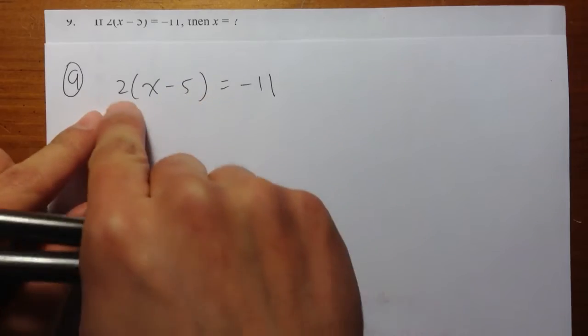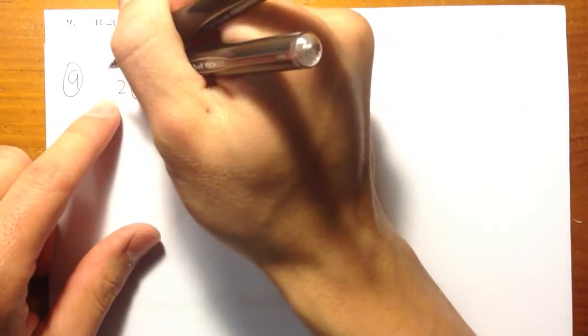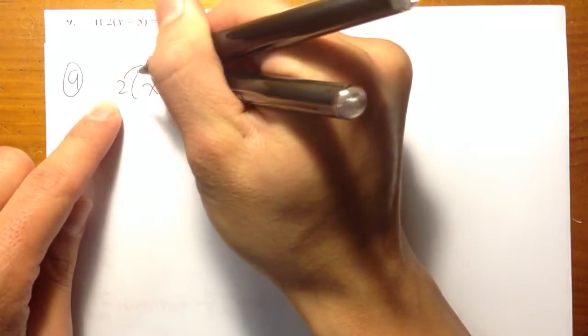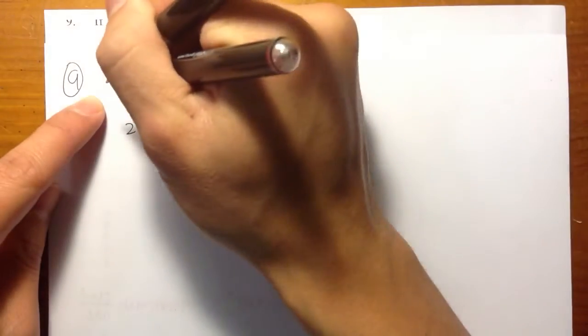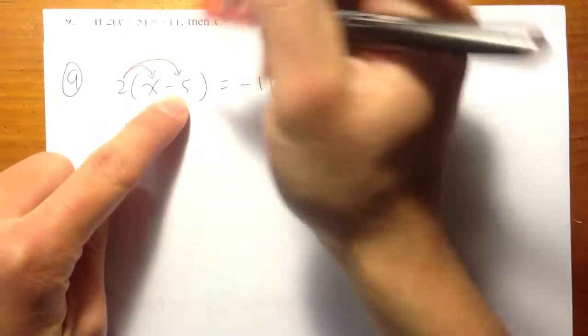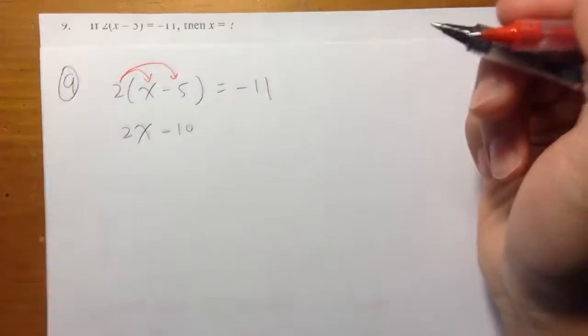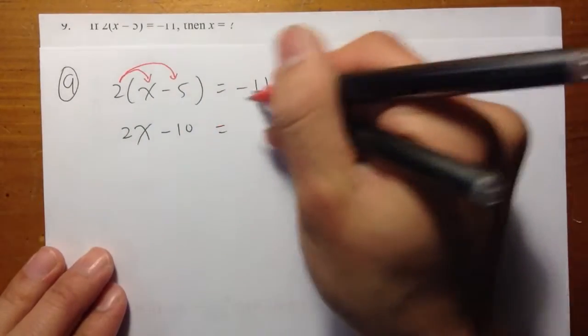Let me just go through the usual steps. First, when I see a parenthesis and a number in front of it, I can distribute. So take the 2, multiply with the x, I get 2x. And take the 2, multiply with negative 5, I get negative 10. That's equal to negative 11.